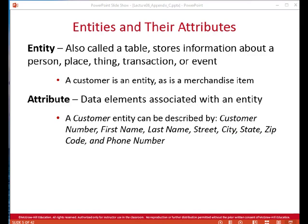An entity is an object that we want to record data about. It can be a person, place, thing, or event. We store these objects as records in a table. So a customer might be an entity, and we might have many customer records. A merchandise item might also be an entity. Attributes are characteristics that we're interested in tracking.